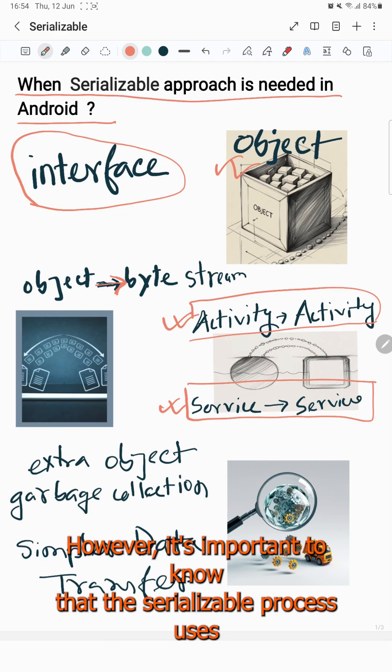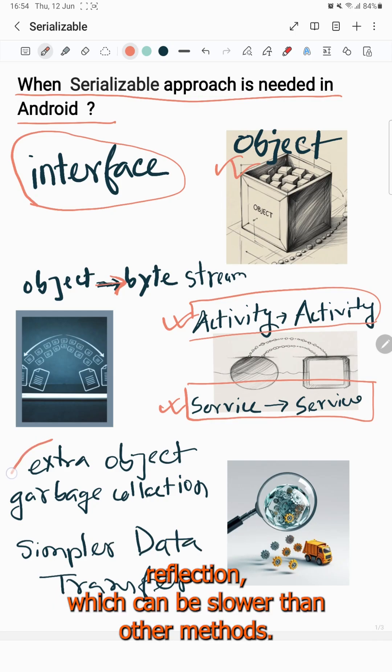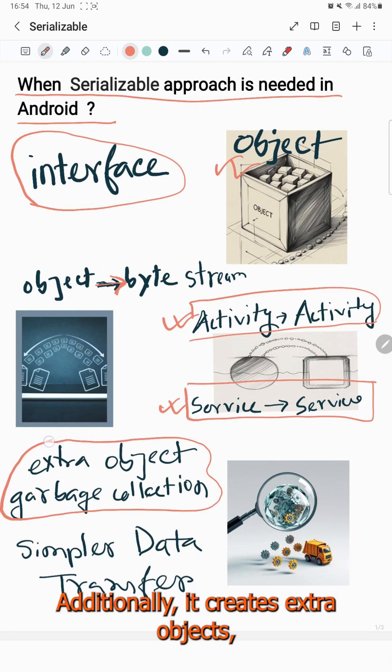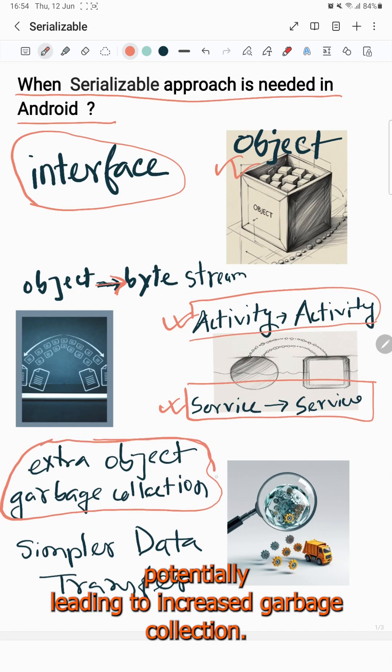However, it's important to know that the Serializable process uses reflection which can be slower than other methods. Additionally, it creates extra objects, potentially leading to increased garbage collection.